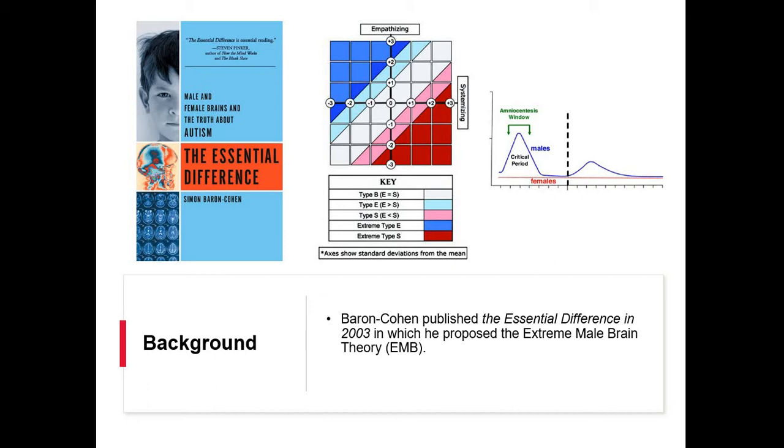This work of fetal testosterone, sex differences, and extreme male brain theory in particular, came from a 2003 book by Dr. Baron Cohen from the University of Cambridge. He talked about an idea that goes way back to the conception of autism. Hans Asperger and his colleagues thought that autism had something to do with an extreme pattern of the male brain.